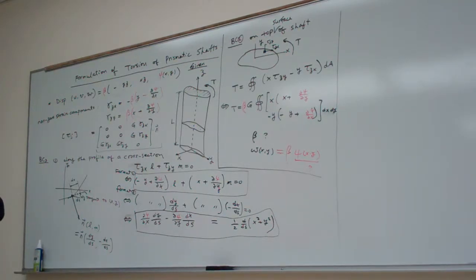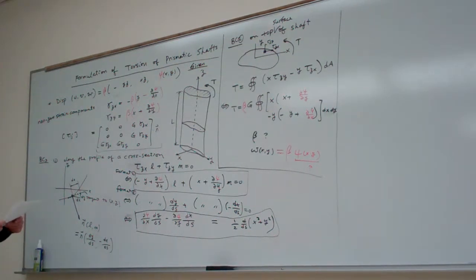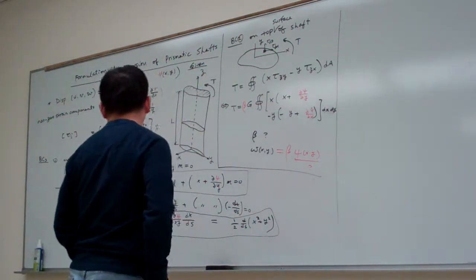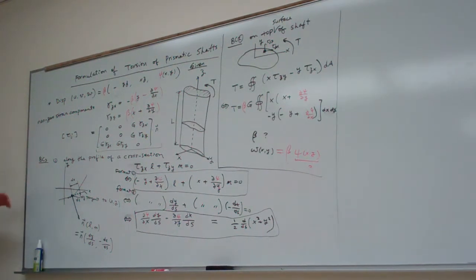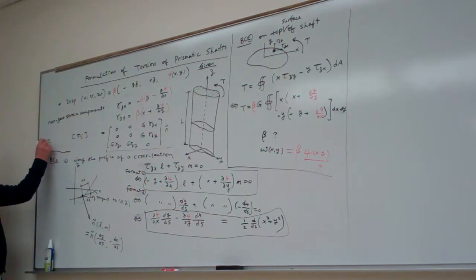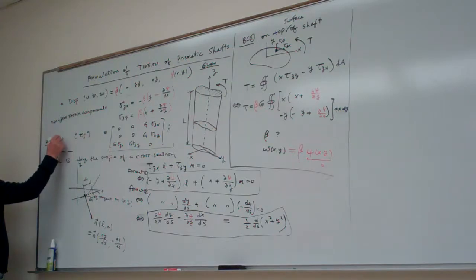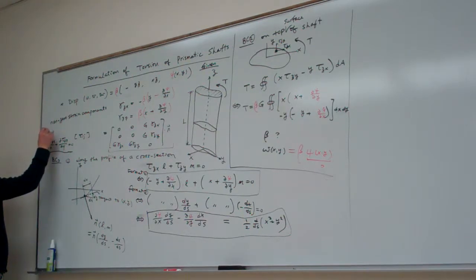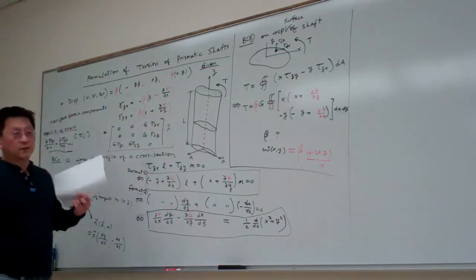So now, the solution is to come to here. I think I forgot one more thing. Besides this formulation and the boundary condition here, I think I forgot is the equilibrium of the tau, tau zx partial x, plus tau zy partial y. This one is called the equilibrium of stress component. I think I forgot this one.